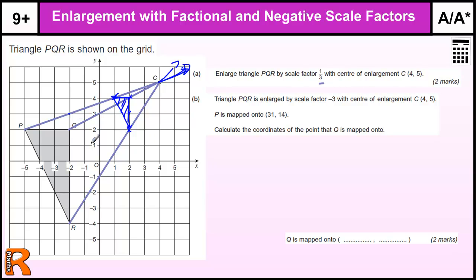So if you think about what we've actually got to do, we've got to calculate the point Q. We're told that P goes on to 31, 14, so that tells us that Q is going to be the same vertical distance, so it's going to be 14. It's going to be in line with that. We've just got to work out where the Q is.